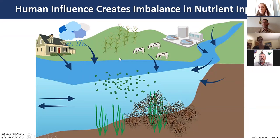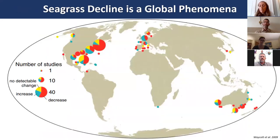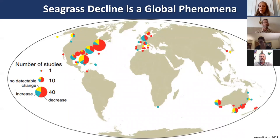Excess nutrient inputs can affect specific estuarine habitats in different ways, and one of the least studied is seagrass decline. Seagrass decline is being observed globally, as shown on a map displaying the number of studies on seagrass coverage by region—the larger the pie chart, the more studies—and where red within a pie chart indicates most studies are finding seagrass decline.